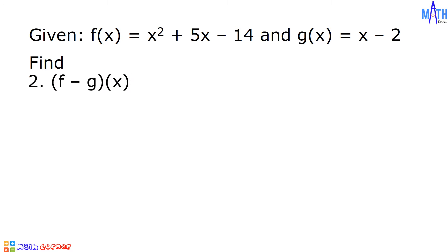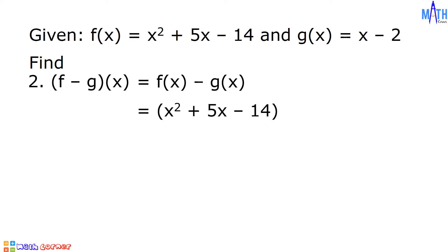Number 2: quantity f minus g of x. It is equal to f of x minus g of x. f of x is x squared plus 5x minus 14, minus g of x which is x minus 2.